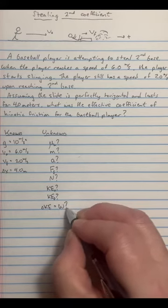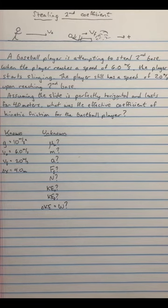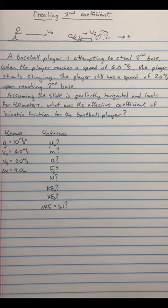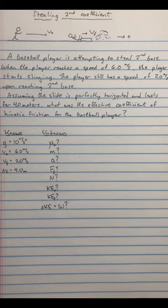This looks a little daunting when we write it this way. Because this is a combination problem of force and energy — we're asking about something that involves forces like the coefficient of friction, but the information is given in terms of speeds, which sounds like energy ideas — we're going to need to sort of mix and match. And that's what makes this a more difficult, well-rounded problem.